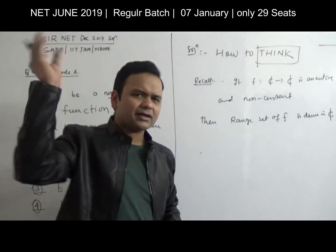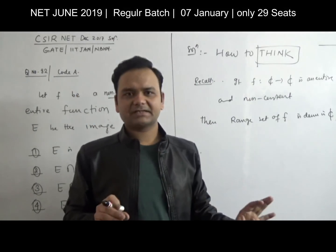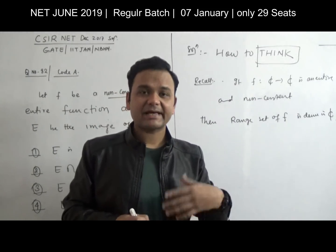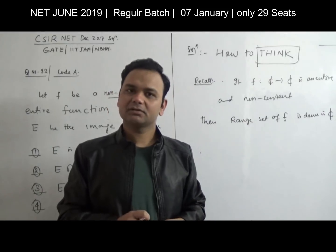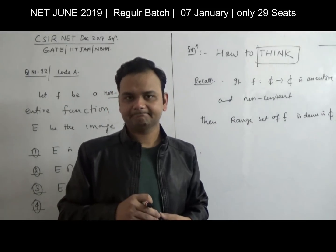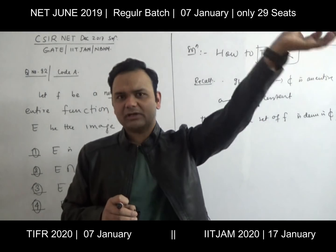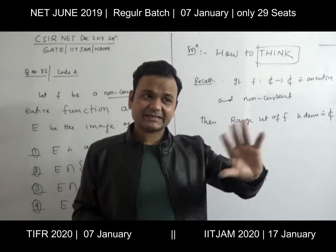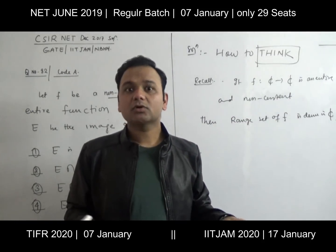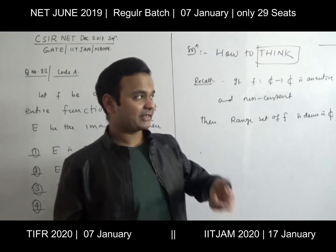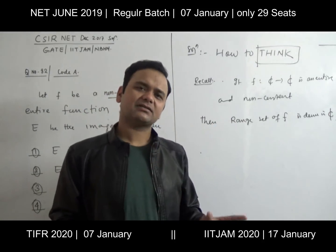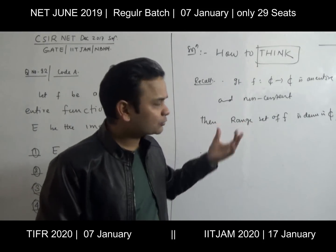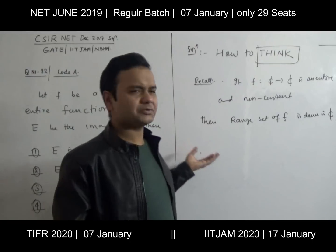For example, the exponential function takes every value except 0. So in the range set, at most one complex number is removed — maximum one value. This means that if the entire function's range set misses more than one value, it would have to be constant. But here it is non-constant, so it contains all complex numbers except at most one possible value. This is Picard's theorem, and it is a more relaxed result that you should know how to use.